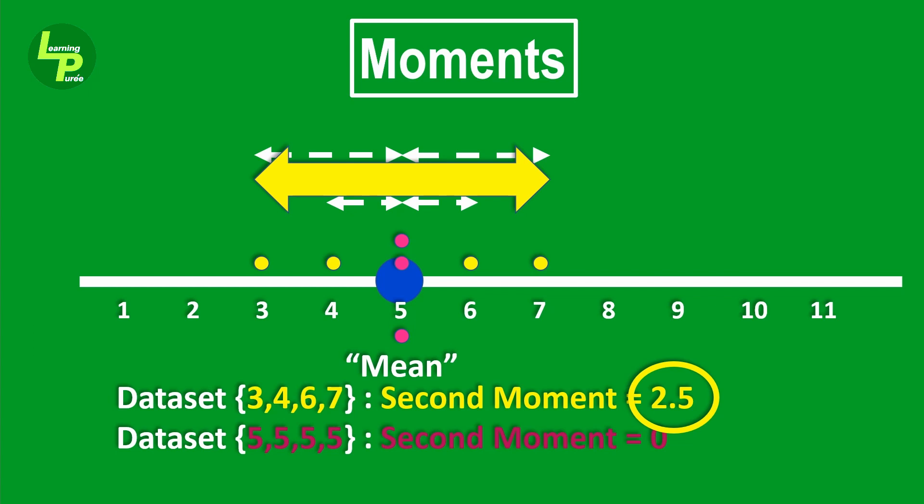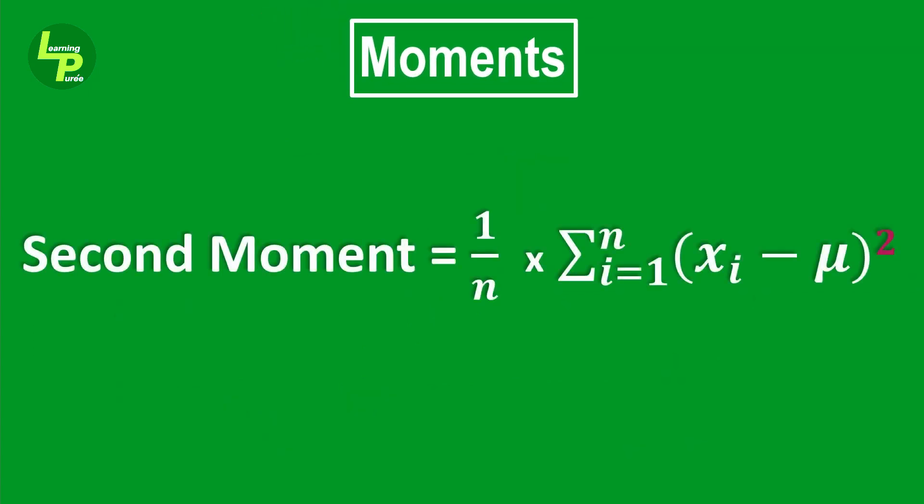So, in short, we see that the second moment highlights the dispersion or the spread of the data points around the mean on the line for the first data set. In other words, we were successful in making the second moment independent of the first moment.